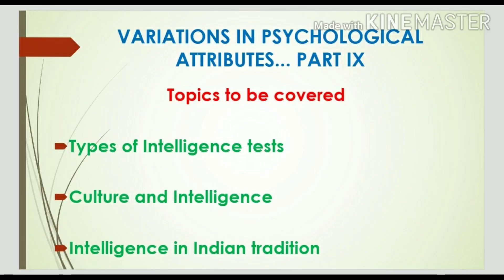Hello everyone, this is part 9 of chapter number 1, Psychology class plus 2. The topics that will be covered in this part are: types of intelligence tests, culture and intelligence, and intelligence in Indian tradition.